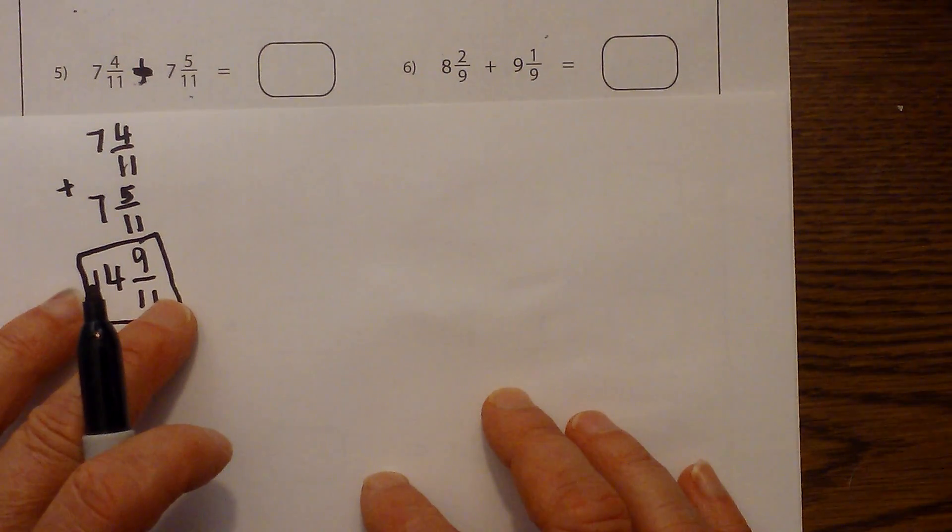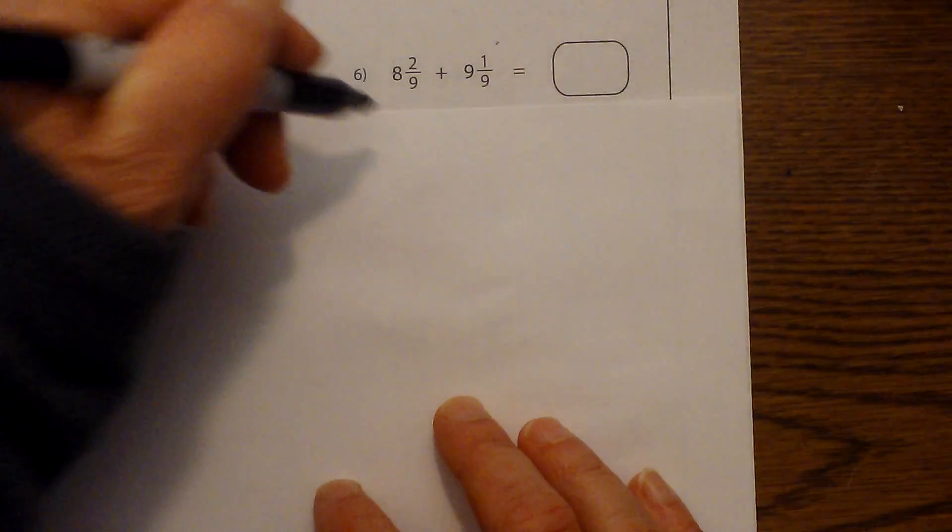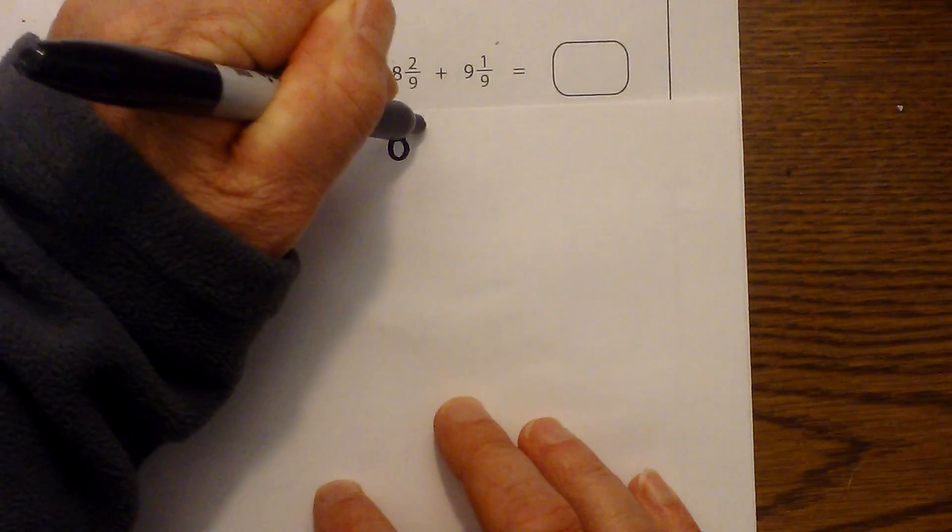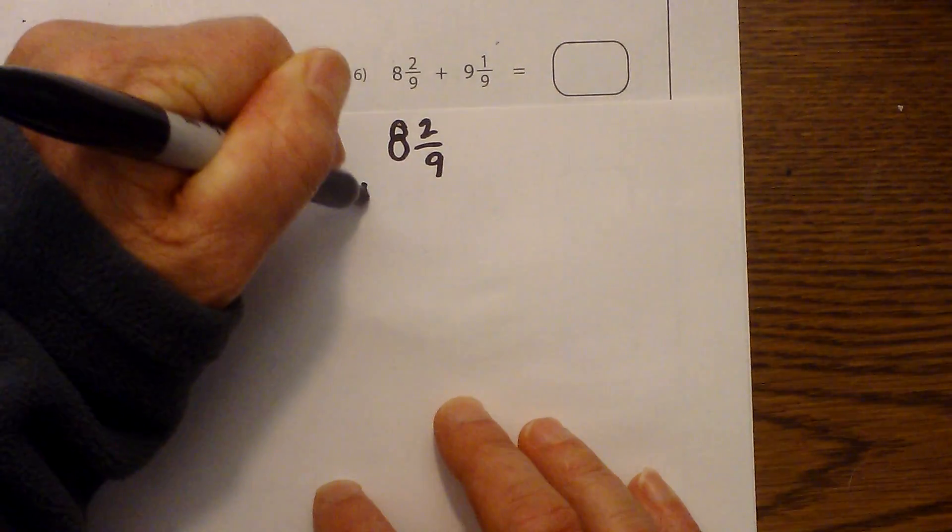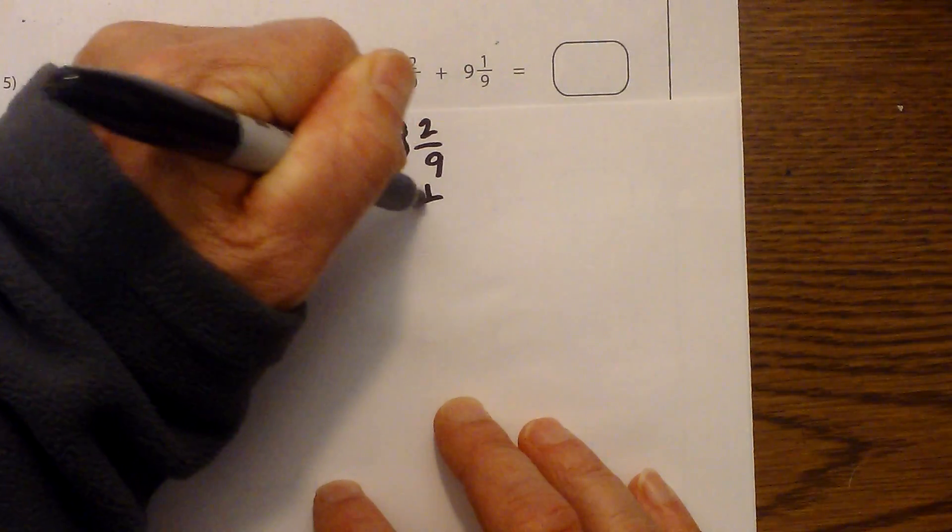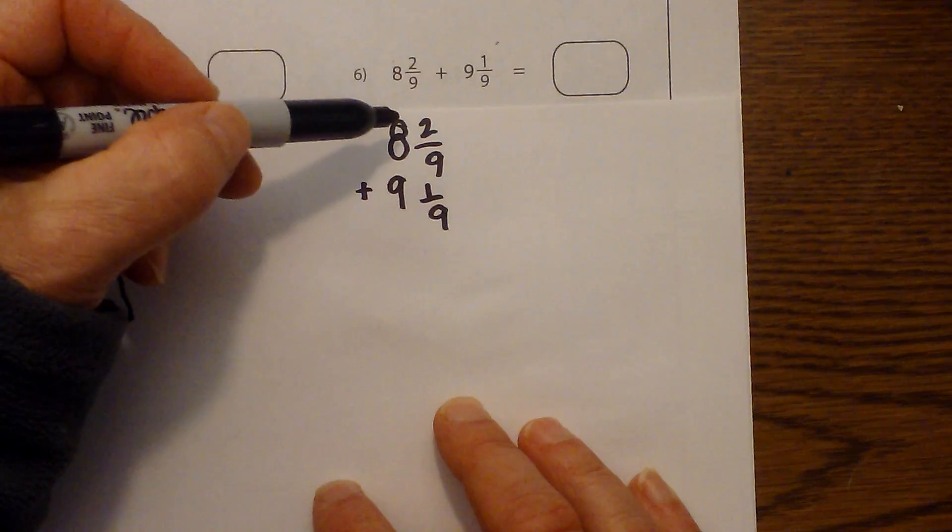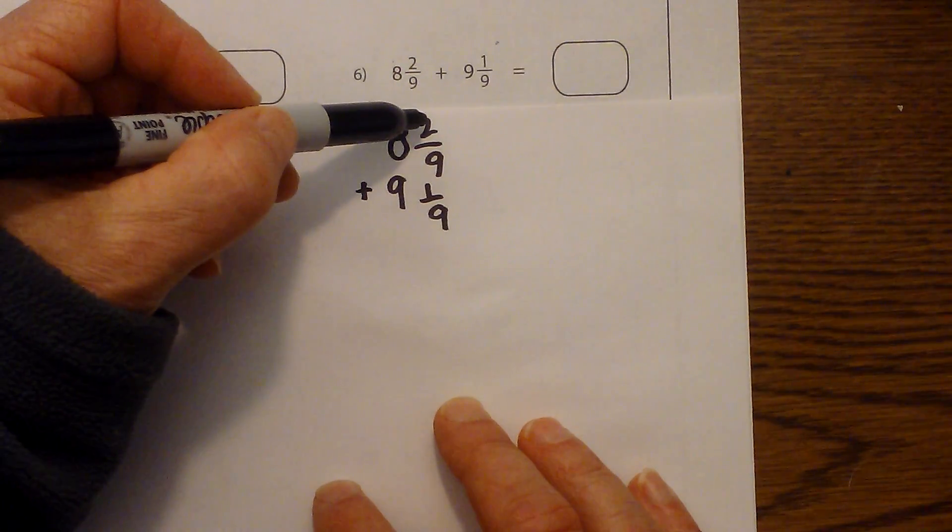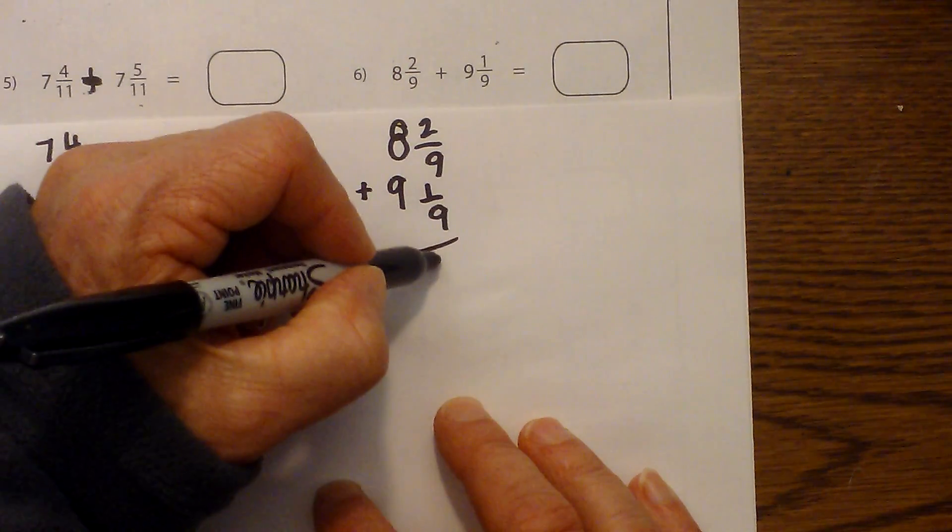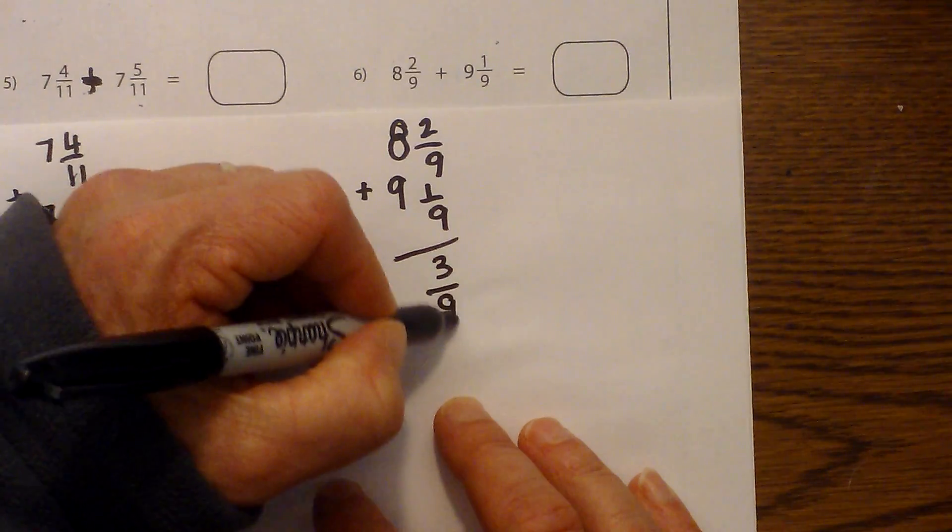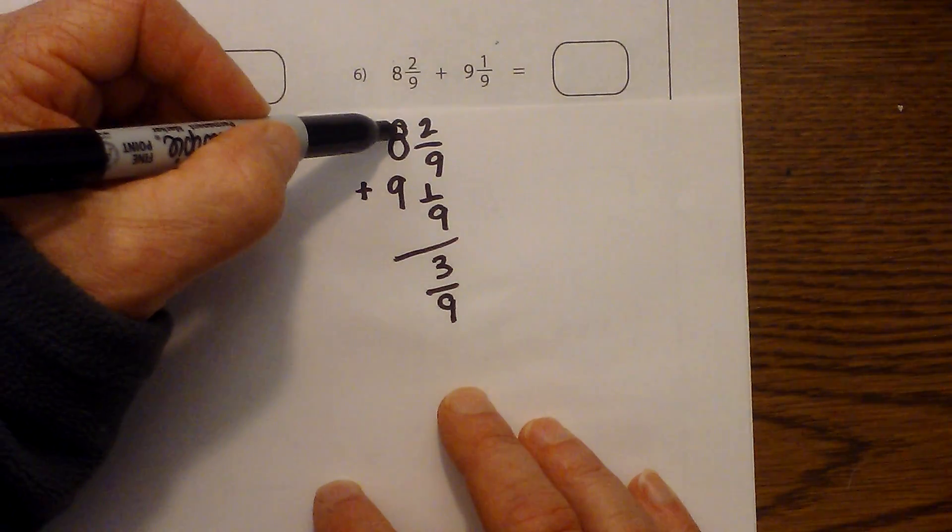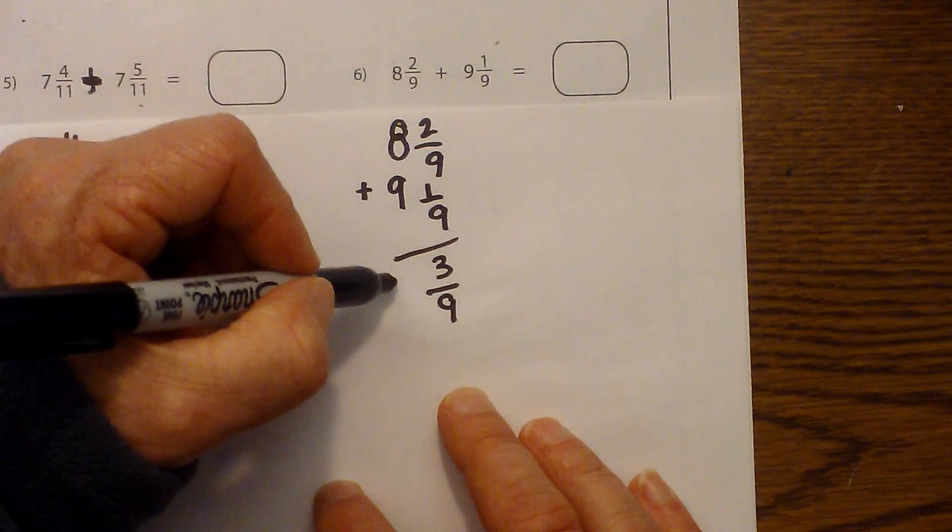Let's work another example right here. I'm going to rewrite: we have 8 and 2 ninths plus 9 and 1 ninths. Now all we do is add them together. Start with the fractions. 2 plus 1 is 3 over 9. And then 8 plus 9 is 17.